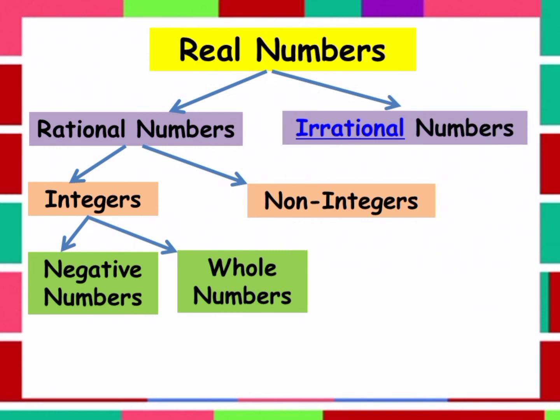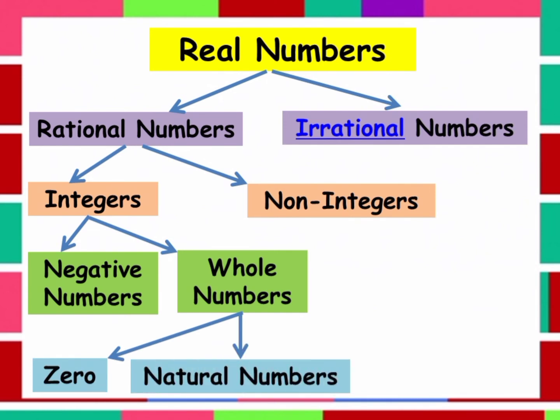And in the whole numbers there is 0 and natural numbers. Ano ba yung mga natural numbers? Edi yung mga 1, 2, 3, or yung counting numbers natin.